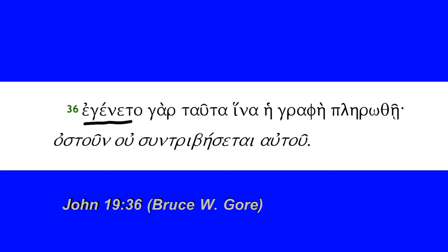So we have 'tauta eginetō' — this is the third person singular aorist middle indicative, commonly translated 'it came to pass,' 'these things happened,' or 'it came about.' Post-positive 'gar,' so 'for this came about' or 'this took place.' The plural subject is 'tauta' — a plural subject can take a singular verb as we have here. So, 'for these things came about.' 'Hina,' a conjunction, takes the subjunctive, so 'these things happened in order that.'